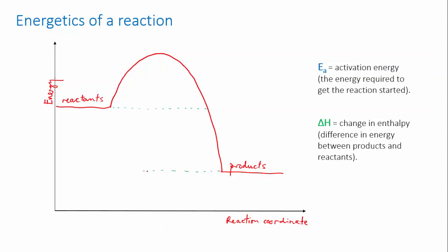There are two important quantities here. Delta H, the change in enthalpy, is the difference in energy between the reactants and the products. If delta H is negative, it means that energy is emitted, as in this reaction here, and we call the reaction exothermic.